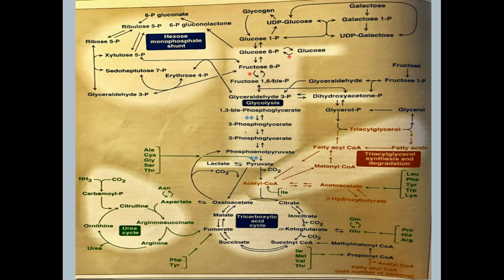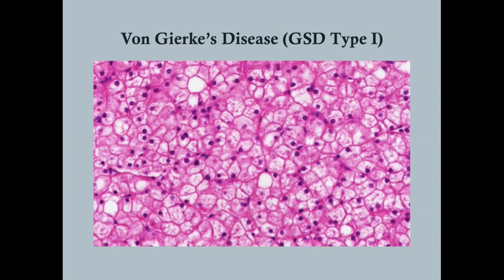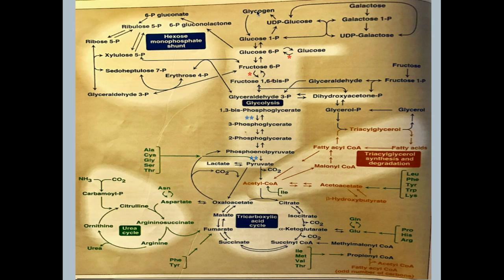Glycolysis and gluconeogenesis are two of the important pathways of metabolism. In the next section, we'll discuss fructose and galactose metabolism, which yields some very important disorders. The major difference between von Gierke's and fructose-1,6-bisphosphatase deficiency is that the latter can break down glycogen to glucose, so it is not a glycogen storage disease.